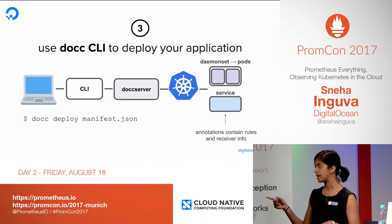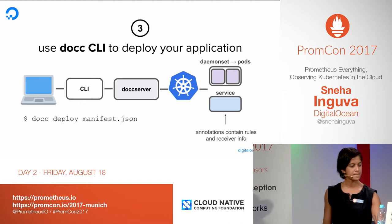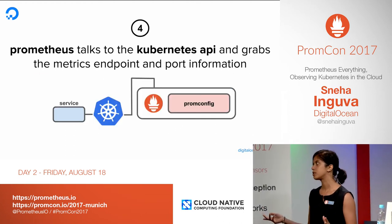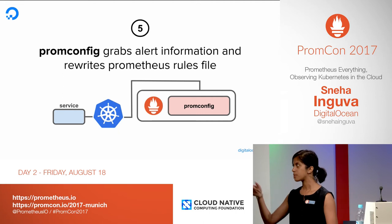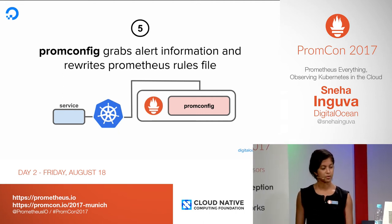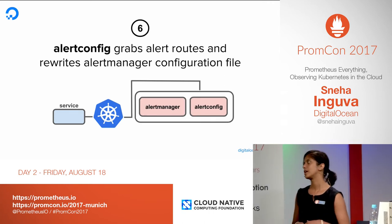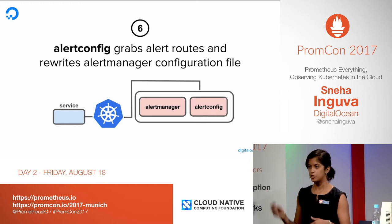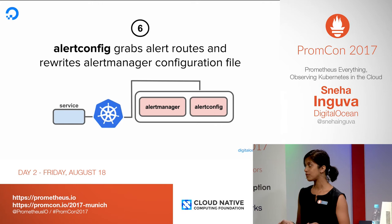The service primitive has something known as annotations, and that's where we're actually storing the Prometheus rules as well as the AlertManager route and receiver information. Prometheus itself talks to the Kubernetes API as part of the service discovery mechanism and grabs the metrics endpoint and port information. PromConfig, the sidecar deployed alongside Prometheus, also talks to the Kubernetes API server, checks the service primitive, grabs the rules information, rewrites the rules files, and restarts Prometheus. AlertConfig behaves similarly — it grabs the relevant route and receiver information, rewrites the AlertManager config file, and restarts it.